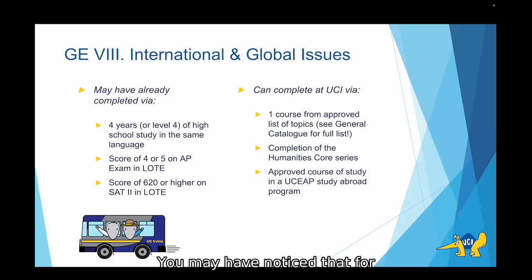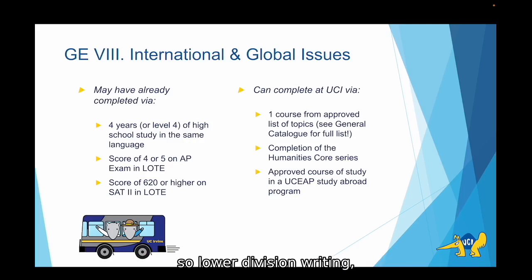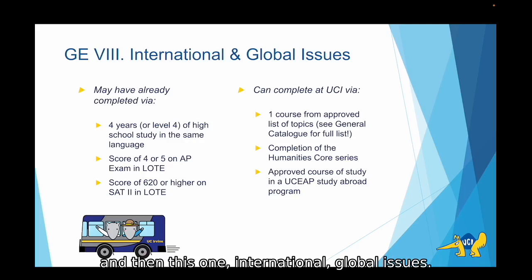You may have noticed that for Humanities Core, it does cover four GEs: lower division writing, arts and humanities, multicultural studies, and international and global issues. So just keep that in mind if you happen to take Humanities Core.